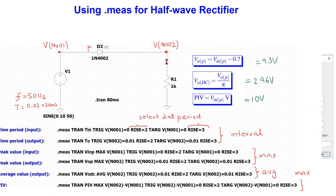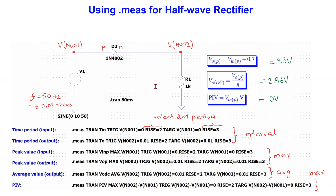First we consider a half wave rectifier circuit as shown. Here we are using a 1N4002 diode, which is not available by default in LTSpice but can be easily added. The circuit theory for the half wave rectifier tells us that in this case the peak value of the output voltage, the average output DC voltage, and the peak inverse voltage across the diode can be determined as shown.